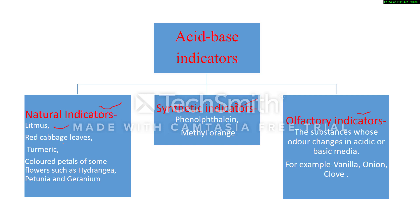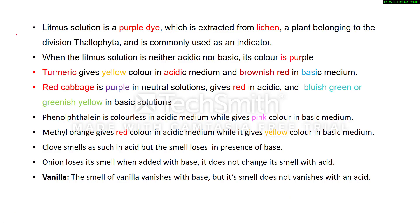Some examples of natural indicators include litmus, red cabbage leaves, turmeric, and colored petals of some flowers such as hydrangea, petunia, and geranium. These occur in nature. Synthetic indicators are prepared in laboratories using chemicals — for example, phenolphthalein and methyl orange. Olfactory indicators are substances whose smell changes in acidic or basic medium — for example, vanilla, onion, and clove.